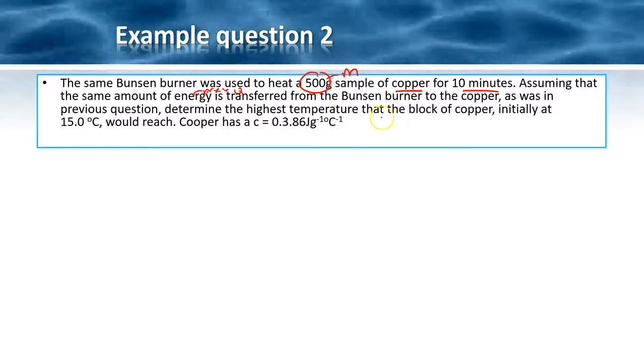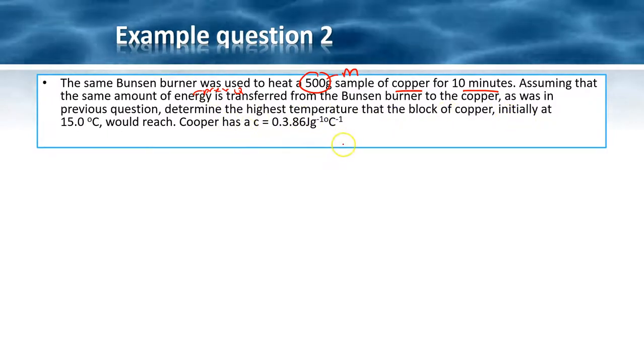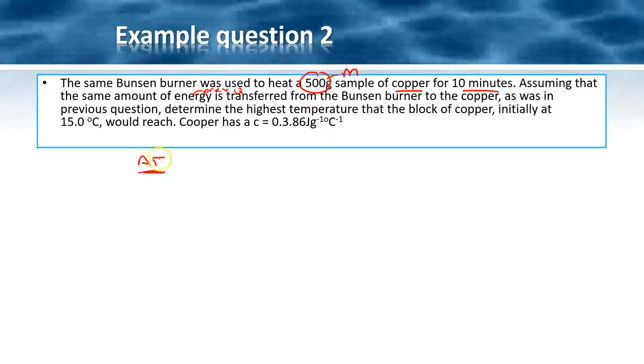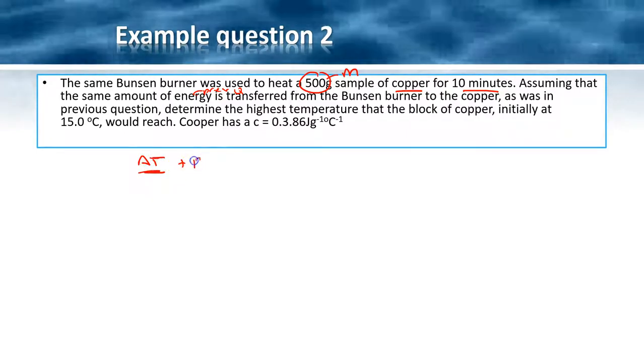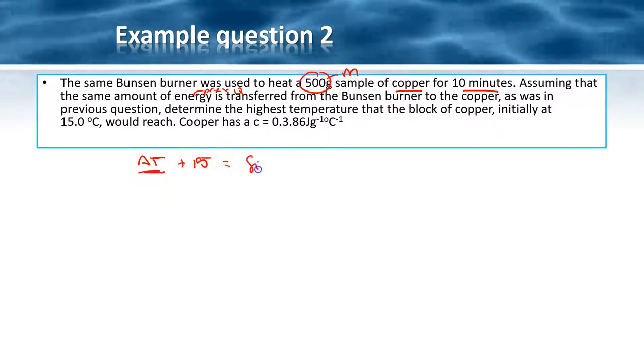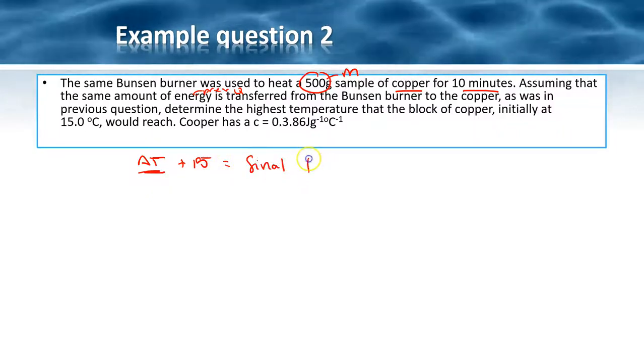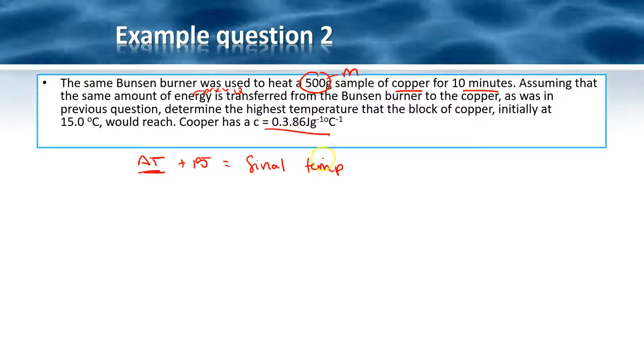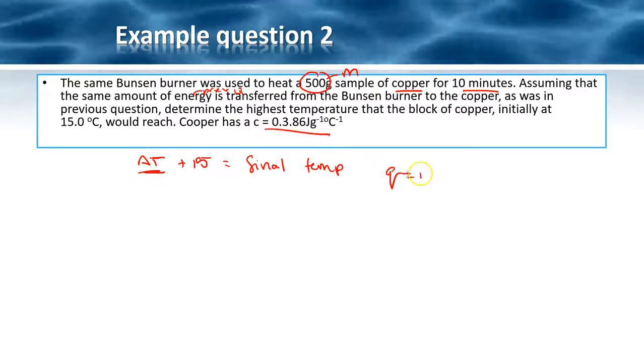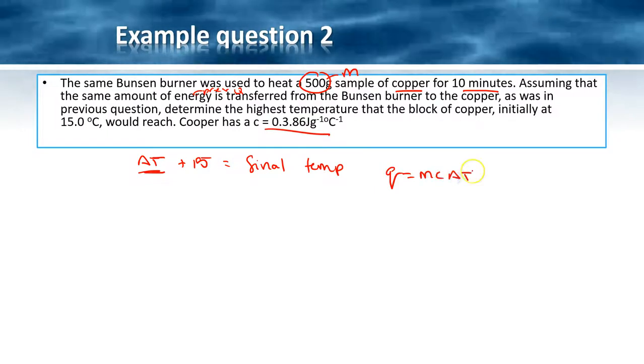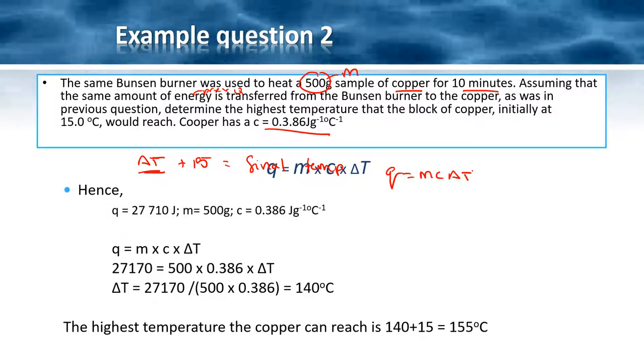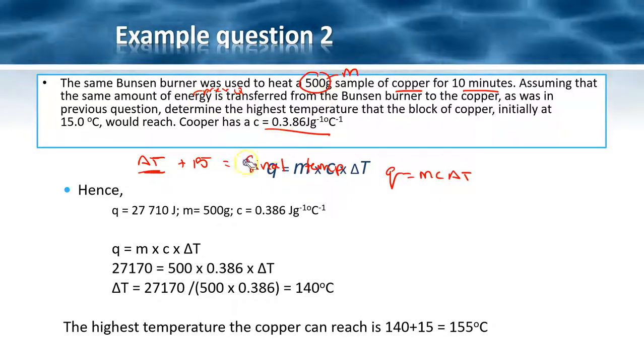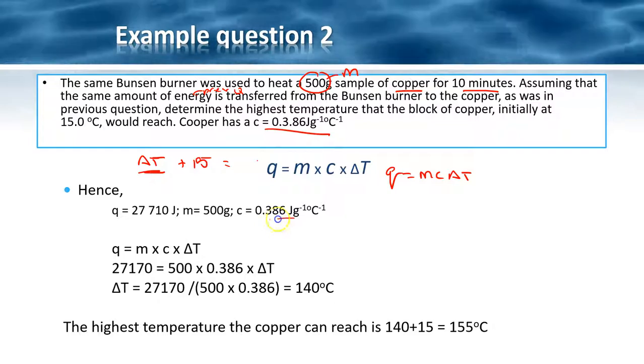Determine the highest temperature that the block of copper could reach. We're going to be looking for delta t in this case, and then adding that to our original temperature is going to give me the final temperature. We have been given the specific heat capacity, so I'm going to use q equals mc delta t.